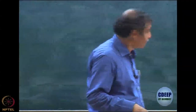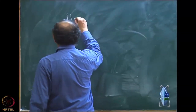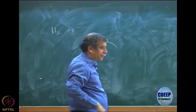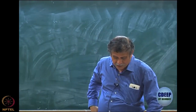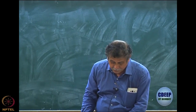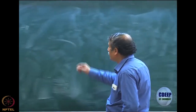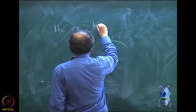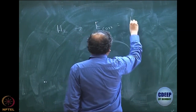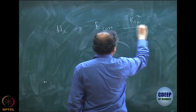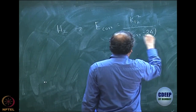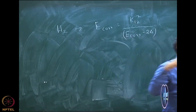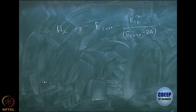So let us continue with the double CI. Yesterday we did this for the monomer hydrogen molecule. I hope you remember that we derived the form for E-correlation in terms of E-correlation itself. So we had E-correlation equal to K12 squared, E-correlation minus 2 delta.